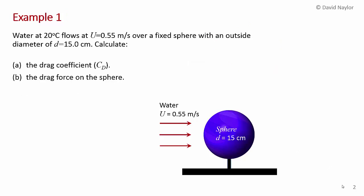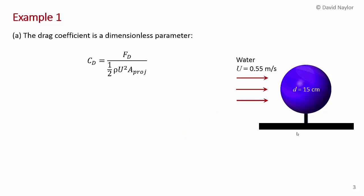In example one, we're considering water at 20 degrees C flowing at a velocity of 0.55 meters per second over a fixed sphere with outside diameter of 15 centimeters. We want to calculate first the drag coefficient, which we'll denote C subscript d, and then the drag force on the sphere — in other words, the force required to hold the sphere in position. The drag coefficient is a dimensionless parameter we've discussed in previous videos on dimensional analysis.